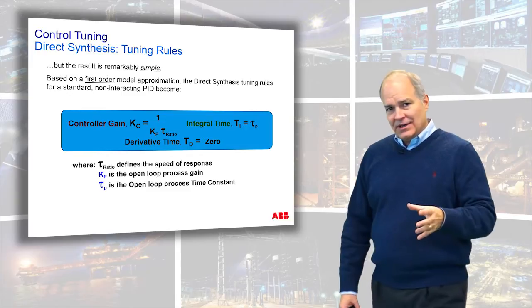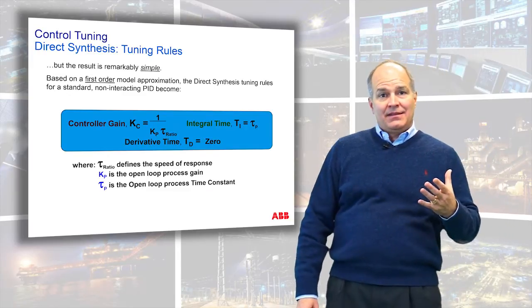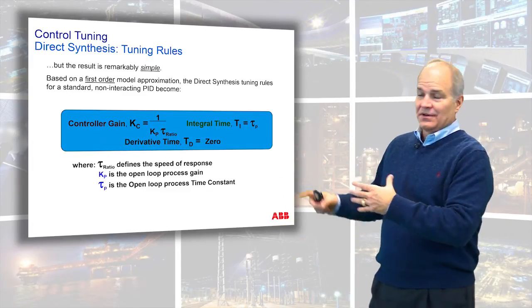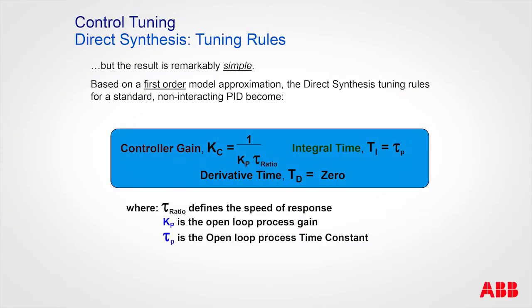As complex as that math is, the tuning rules are really pretty simple. The proportional gain and the process gain are inversely proportional. Then there's the tau ratio — that's your knob. If it's a big number, you have a slow response; if it's a small number, you have a fast response.